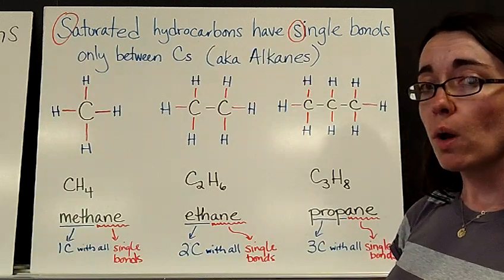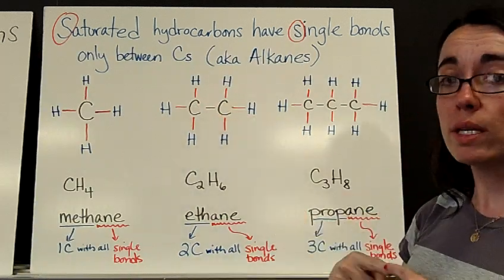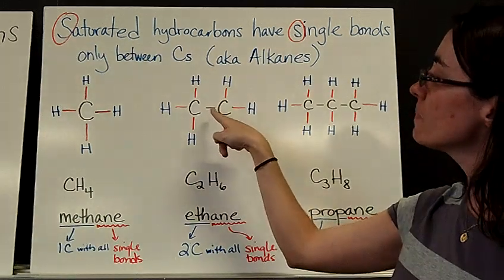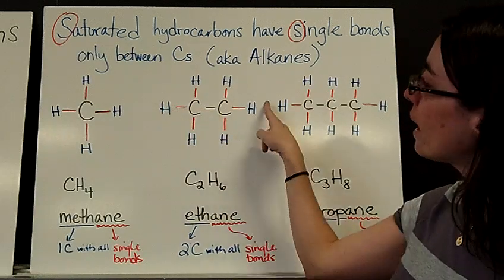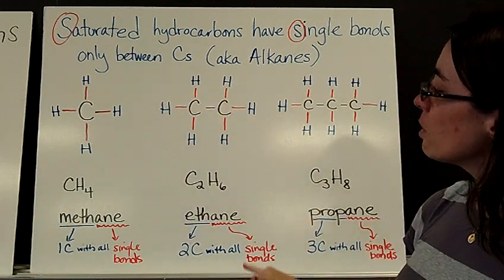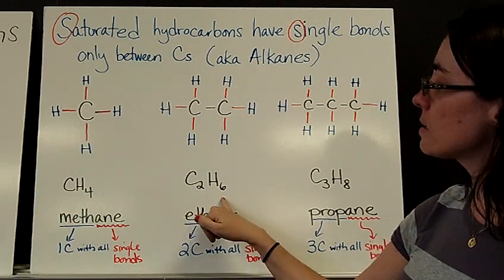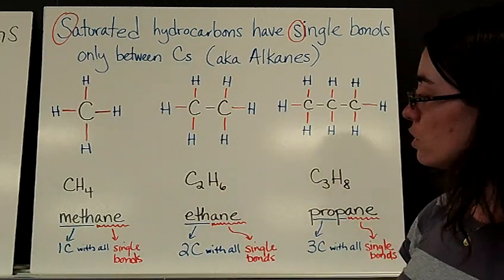The next larger one in the alkane family would be two carbons joined together. You'll see a black bond here showing carbon to carbon bond, and then all of the rest of the bonding areas are filled with a hydrogen.